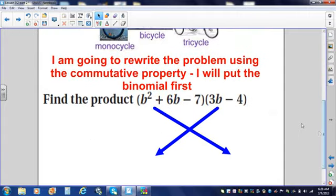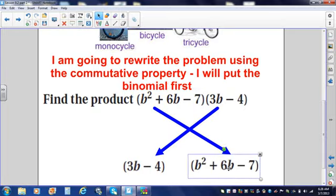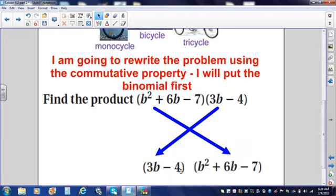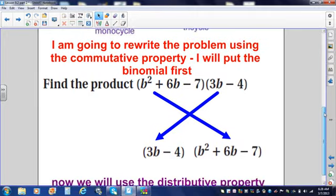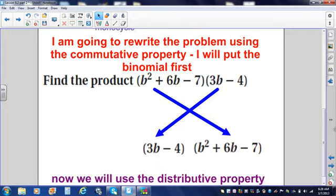All right, before we work out the problem, I'm going to rewrite the problem using the commutative property. Come on, the commutative property is so easy. Don't boo. So I'm going to take the binomial, which is at the end of our problem, and I'm going to put it at the front. I'm going to take the trinomial, which is at the front of our problem, and I'm going to put it at the back, the commutative property. That's easy. I'm just rewriting the problem with the commutative property because this is going to make it easier to do.